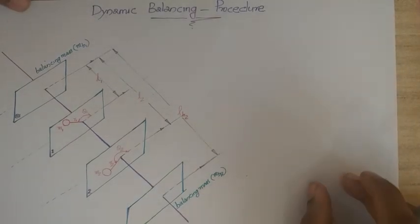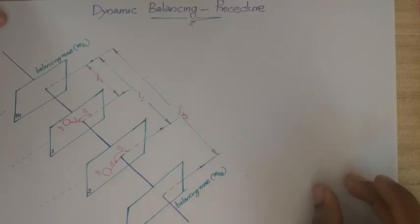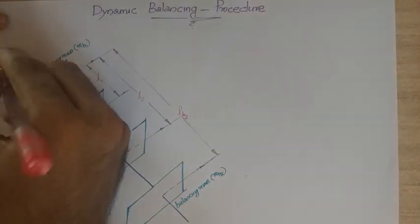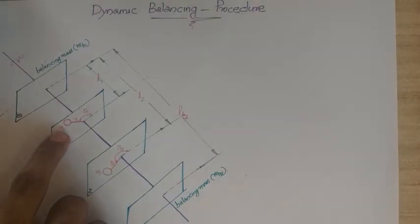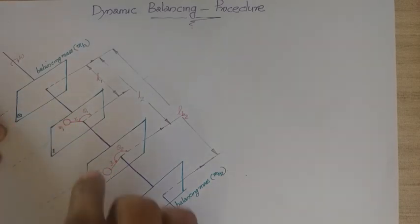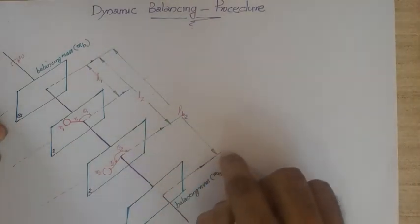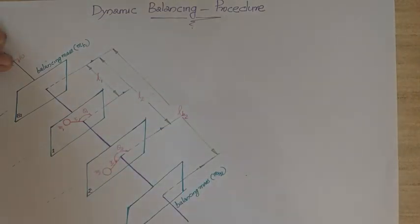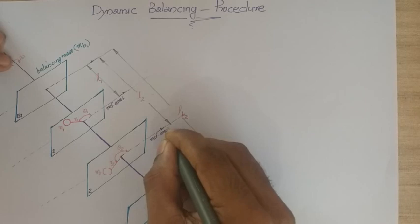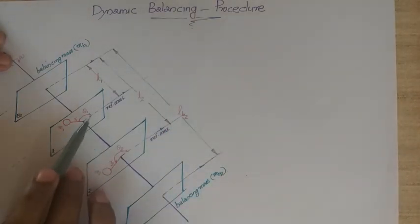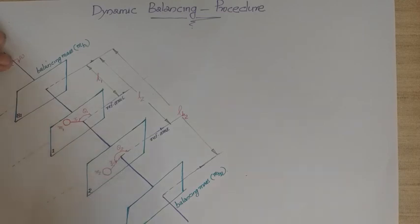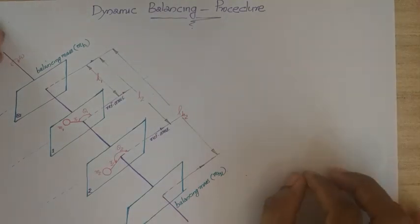In this video we will be discussing the dynamic balancing procedure for solving dynamic balancing problems. An example is given: a single shaft is rotating at some angular velocity omega, containing two rotating planes named 1 and 2 with masses m1 and m2 at radial distances r1 and r2. The angular positions are measured from the reference axis for all rotating planes.